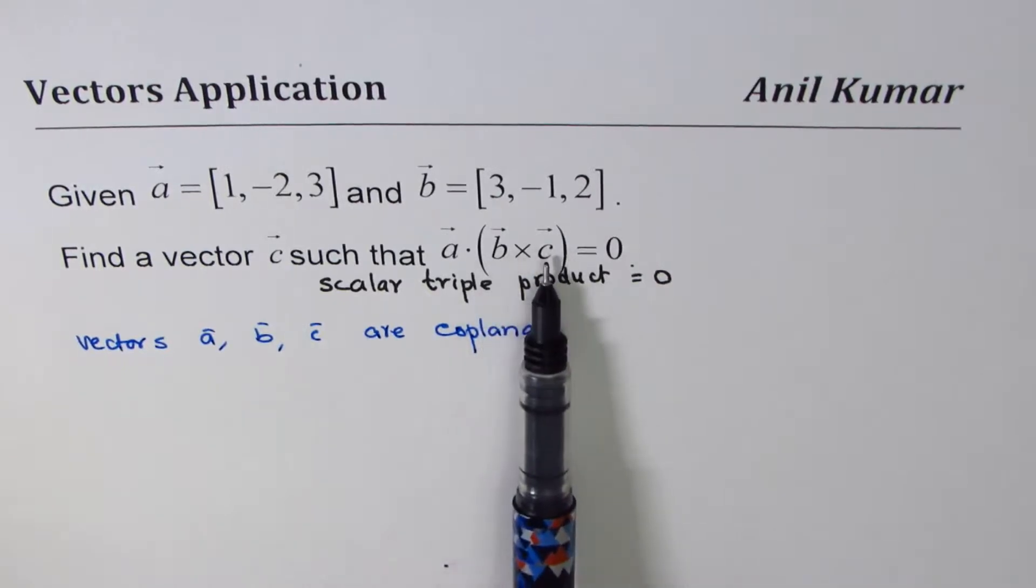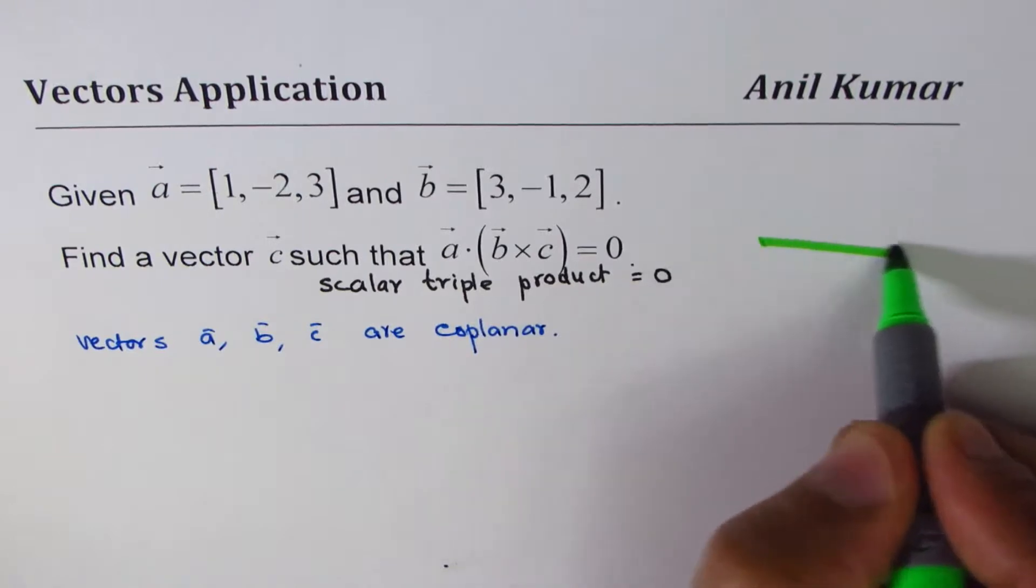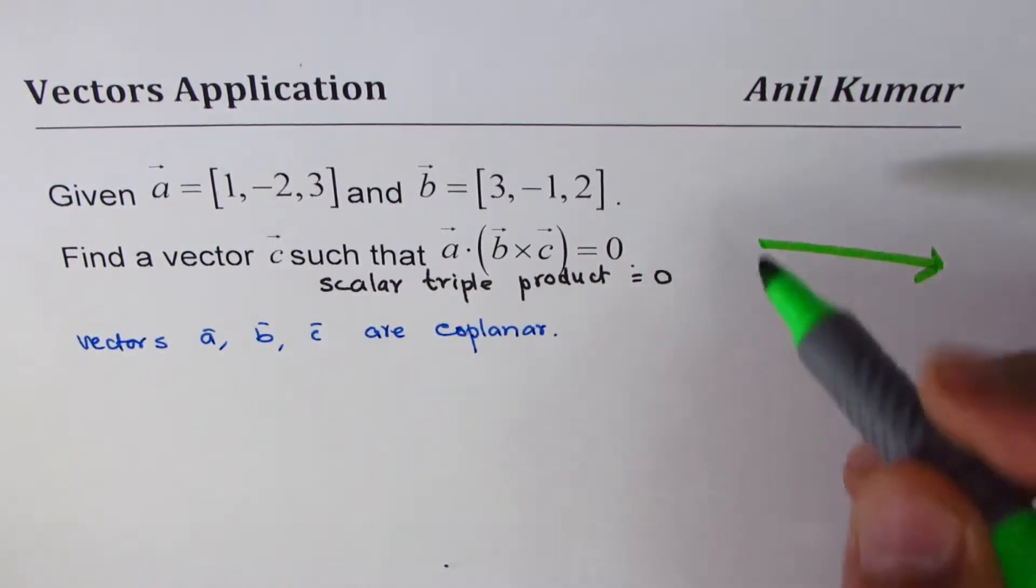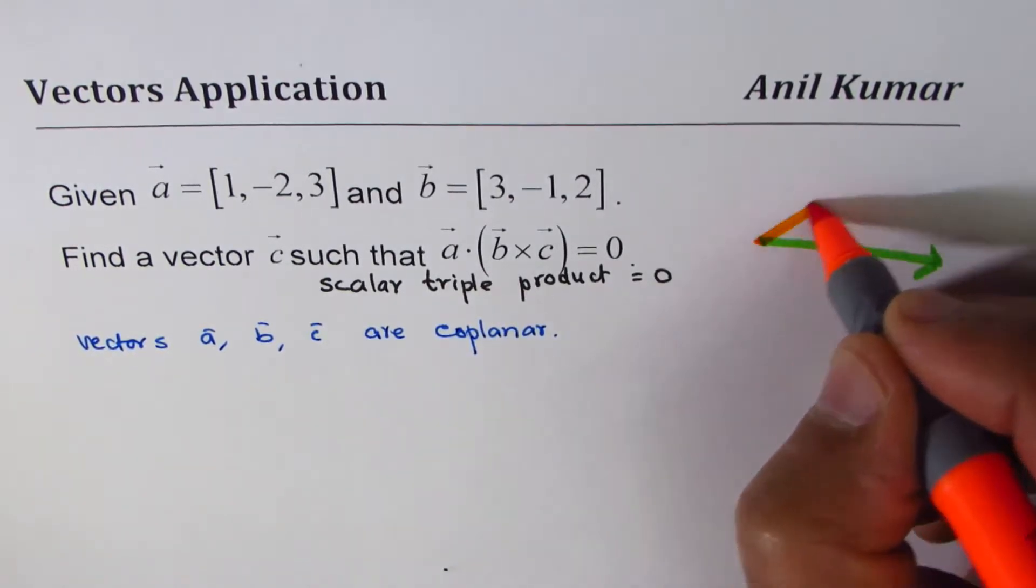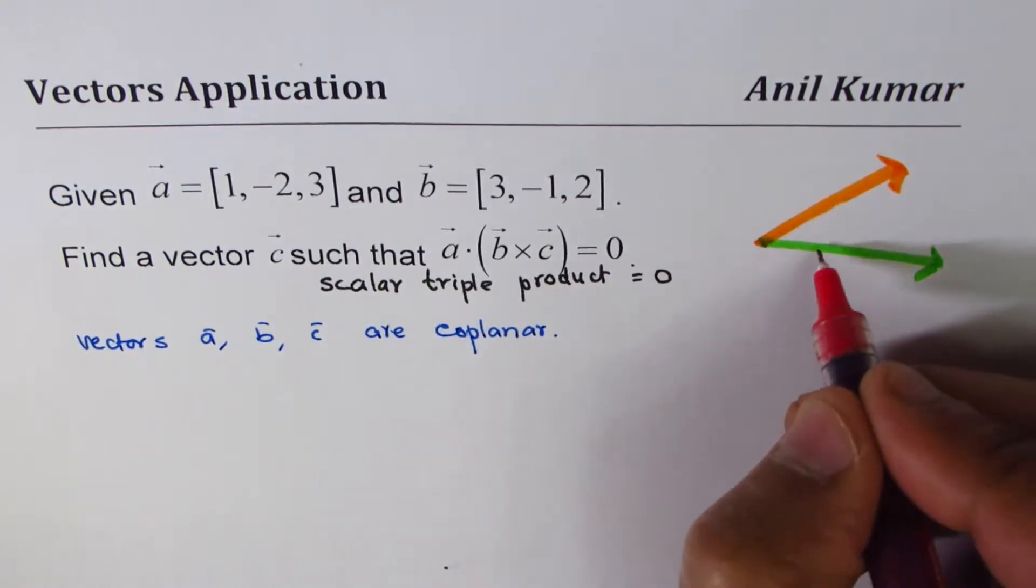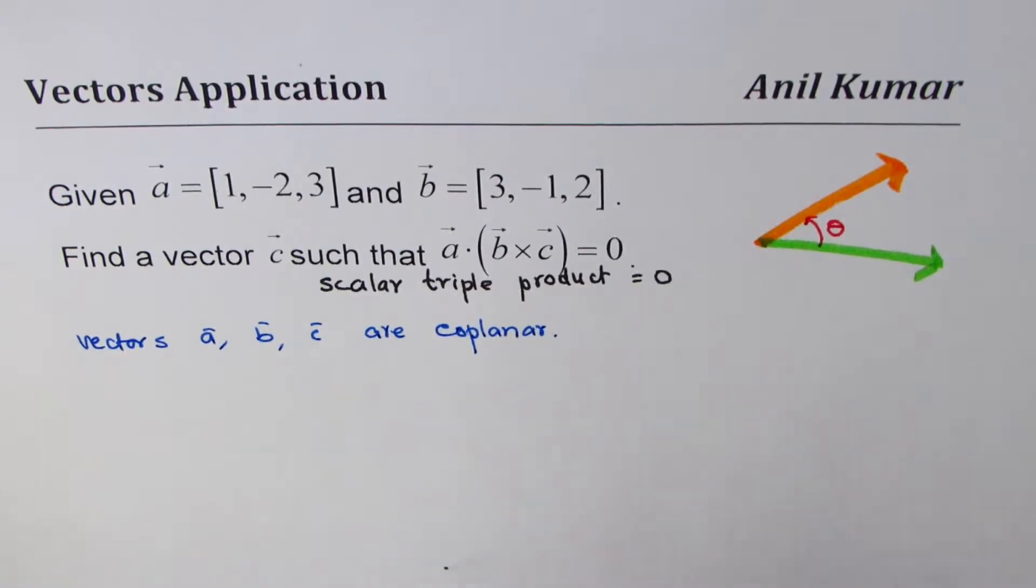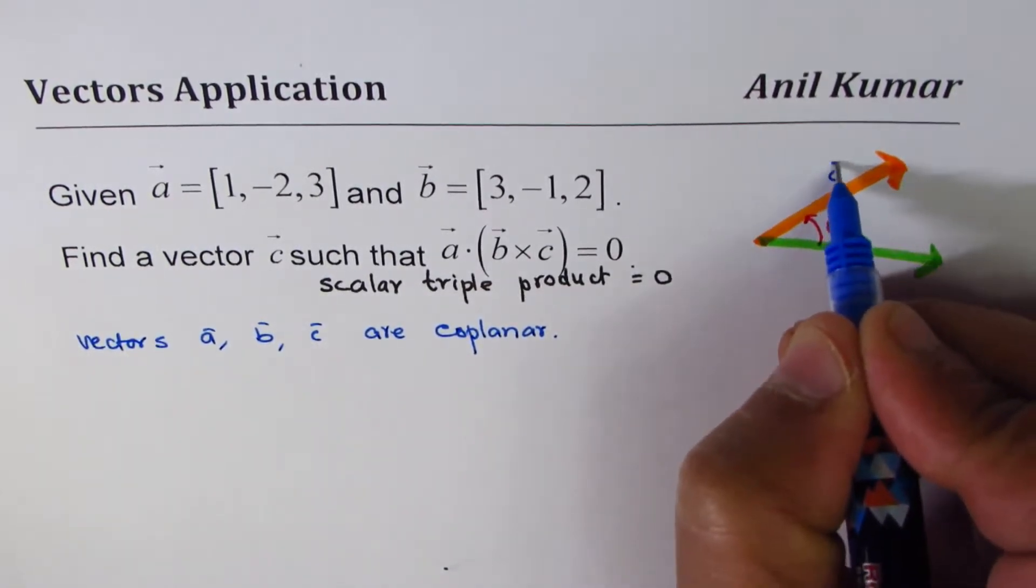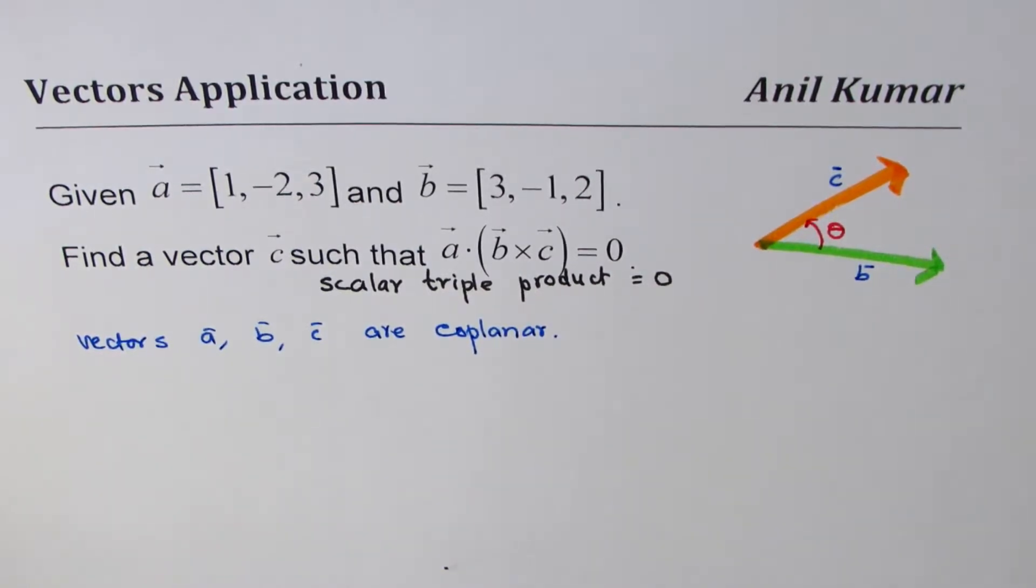A dot product is 0 when we have two things which are perpendicular, and the cross product results into a normal. So if I have a vector b and a vector c with an angle theta, if I do b cross c I'll get a vector which will be normal to both of them.